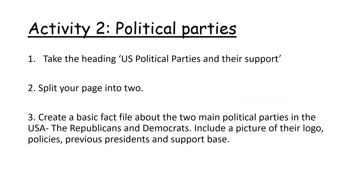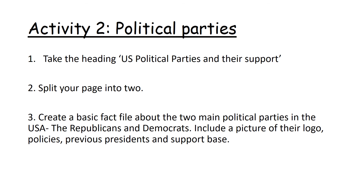Now your next activity, Activity 2, is looking at the political parties. You're looking to take the heading 'US Political Parties and Their Support' in your jotter, split your page into two, and create a basic fact file about the two main political parties — the Republicans and Democrats. You can include a picture of their logo, some of their policies, any previous presidents, and their support base — so who actually votes for them. Use this page in your booklet to help you complete this task.